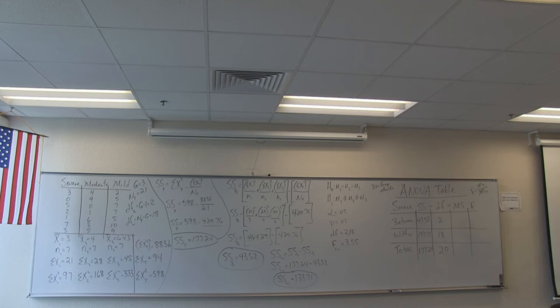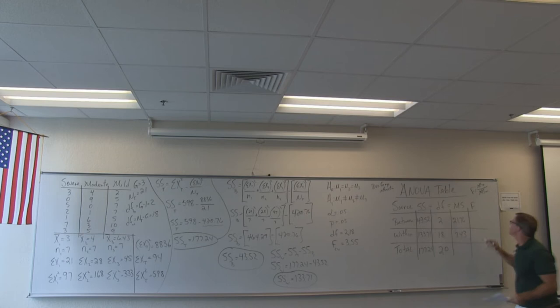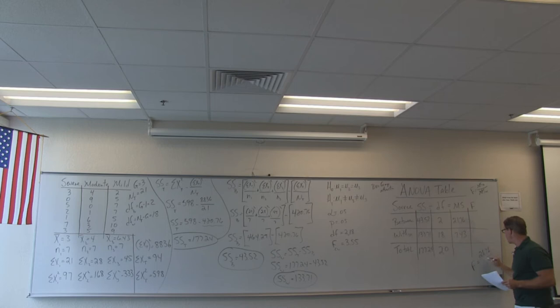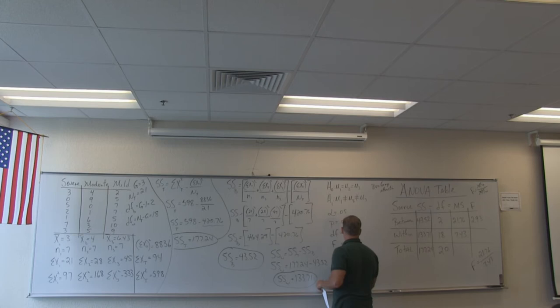We know the mean square is something very similar to a variance. SS between divided by df between gives us 21.76. SS within divided by df within gives us 7.43. The F statistic is the ratio of mean square between divided by mean square within: 21.76 divided by 7.43. F in this case is 2.93.